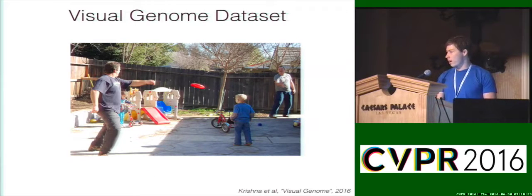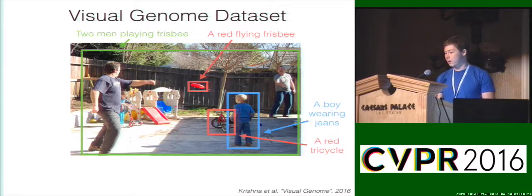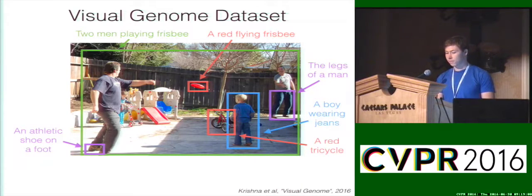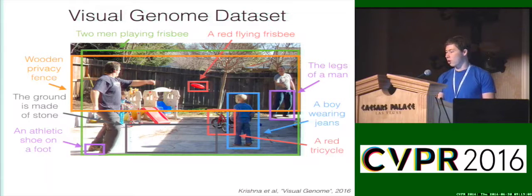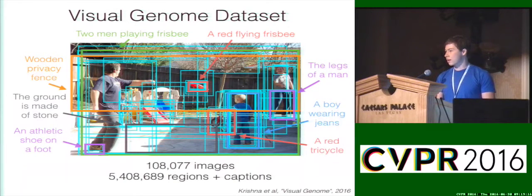The dense captioning task is relatively open-ended, so we need some way of telling our models what they should and should not describe in images. For this, we simply ask people to perform the dense captioning task and train our models to mimic the people, using the Visual Genome Region Captions dataset. When real people perform dense captioning, they give a lot of interesting results. Sometimes people describe scene-level information, like two men playing frisbee. Sometimes people describe objects, like the red flying frisbee or the boy wearing jeans. Sometimes people describe object parts, like the legs of the man or the athletic shoe on the foot. And sometimes people describe background regions — the stuff in the image — such as the wooden privacy fence or the ground made of stone. Overall, the dataset is very densely annotated, with about 50 regions and captions per image, and in total it contains more than 100,000 images and more than 5.4 million human-written regions and captions.